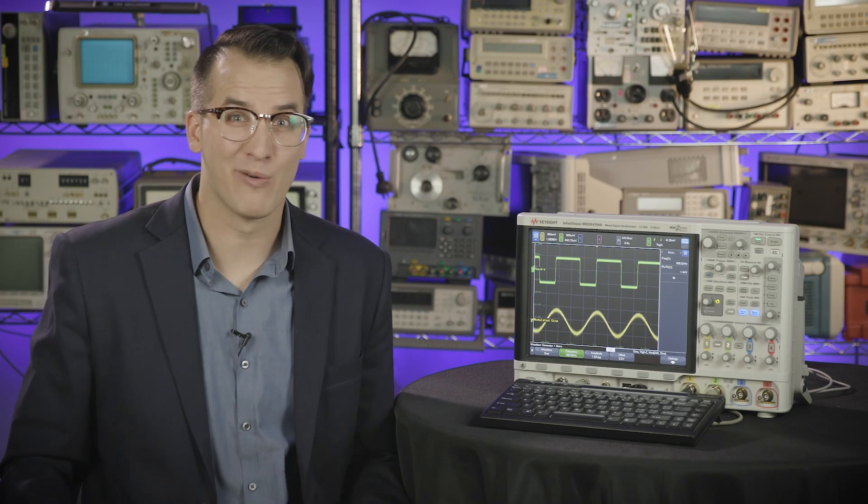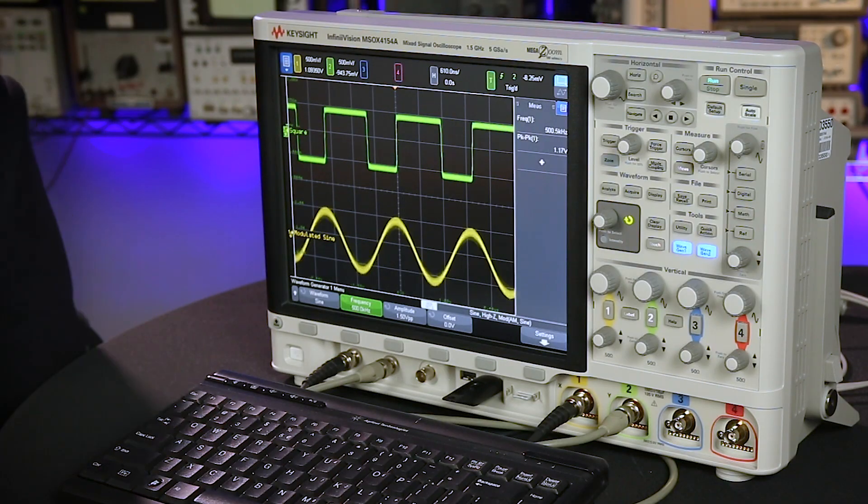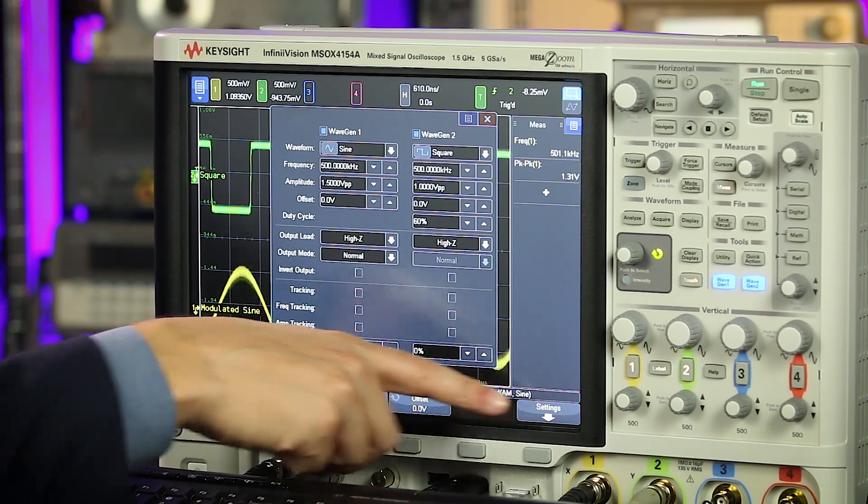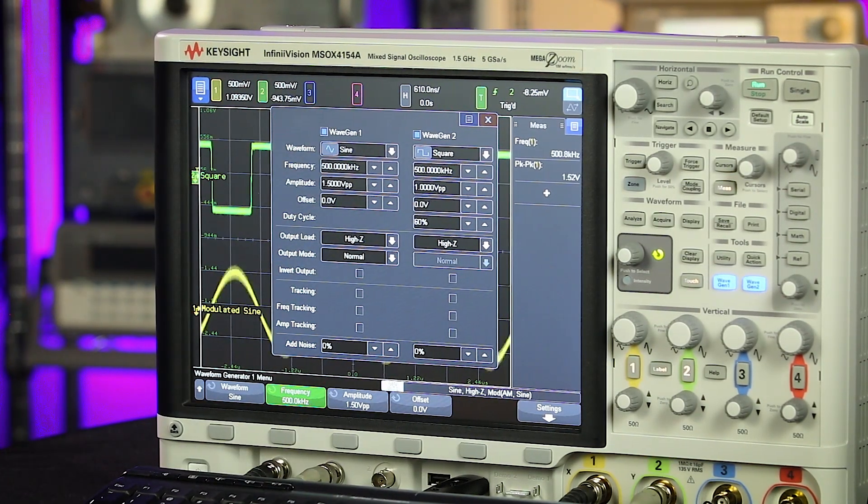And here's a quick bonus hack to reward you for waiting until the end. If you have an InfiniVision scope with a touch screen, from the WaveGen control menu, you can tap this little bottom bar and you get a kind of a hidden menu for the waveform generator controls.